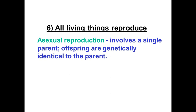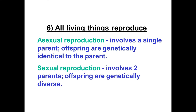Our sixth and final characteristic is that all living things reproduce. There are two forms of reproduction. Asexual reproduction involves a single parent that copies itself and divides into two cells — the offspring are genetically exactly the same as the parent. Or sexual reproduction, which involves two different parents, and the offspring are genetically diverse, meaning two parents combine their DNA and the offspring that forms is not exactly like either one of the two parents.